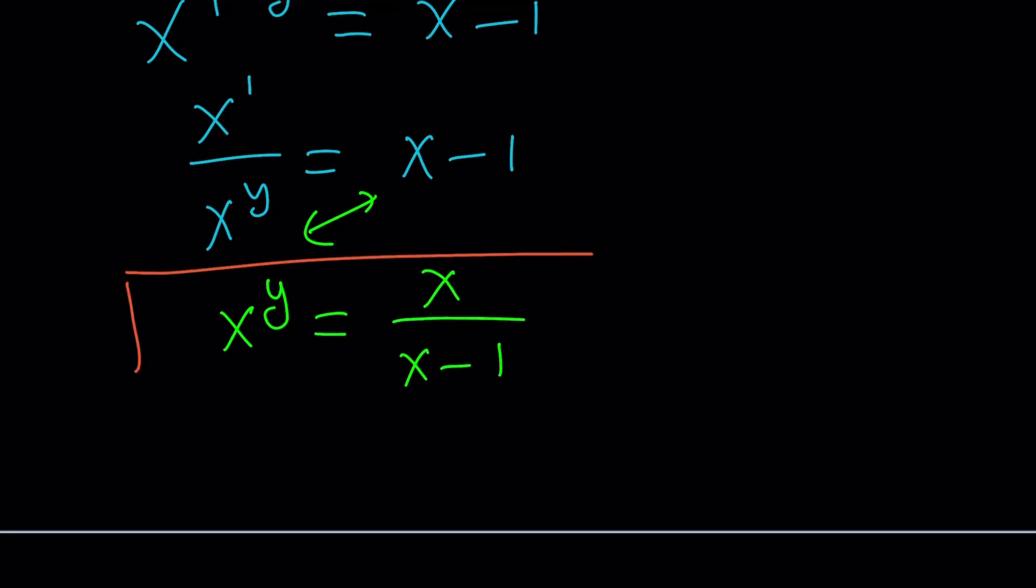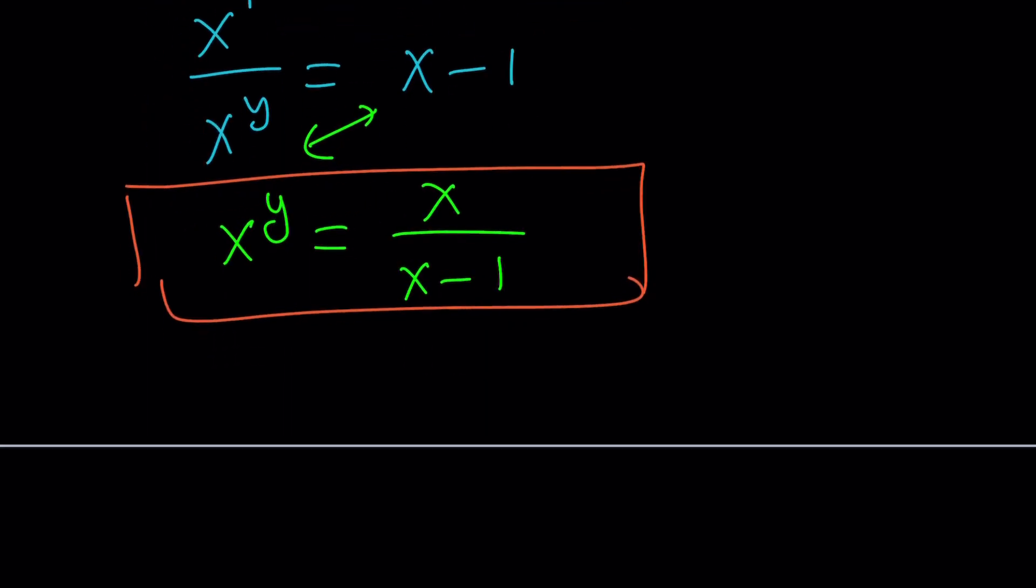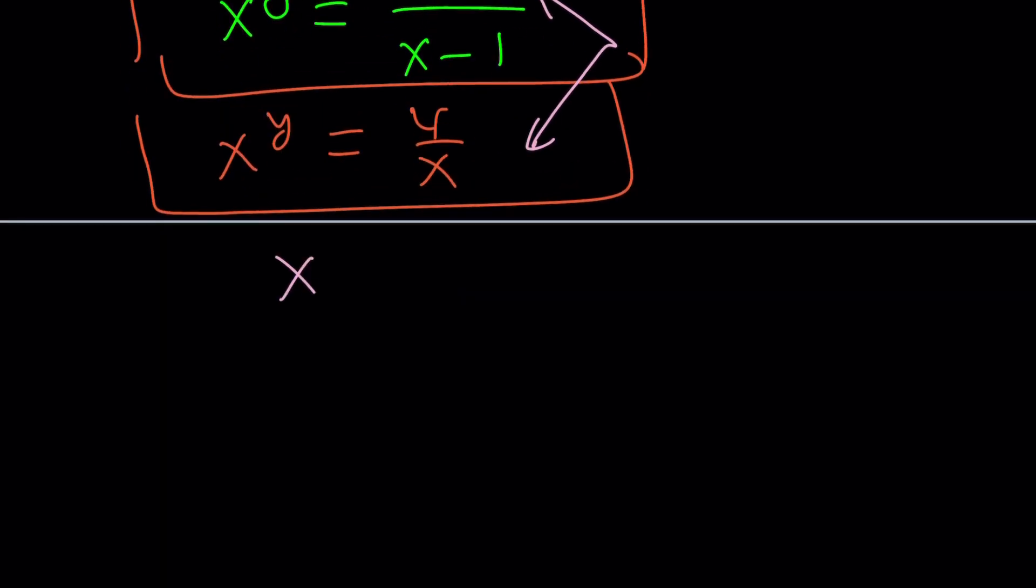So we've got two different values for x to the power y. This is one of them, and the other one is 4 over x. Since both of these expressions are equal to the same thing, they have to be equal. That's the general principle. So let's set them equal to each other.